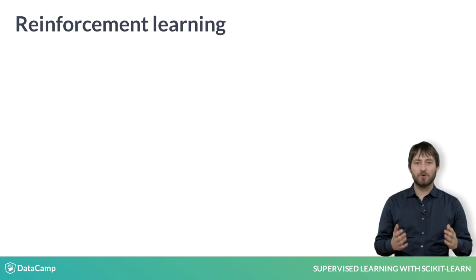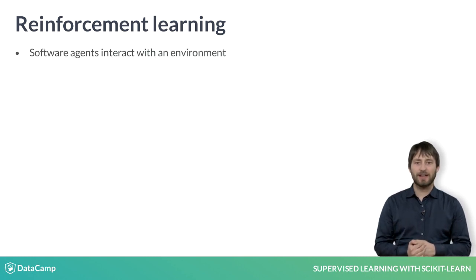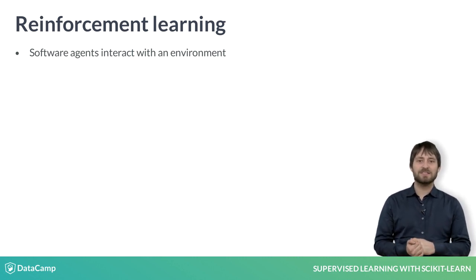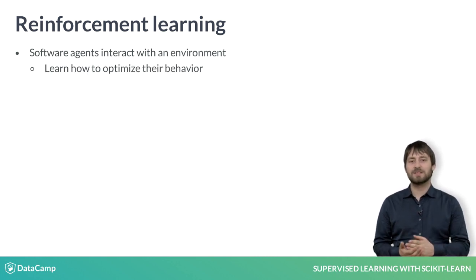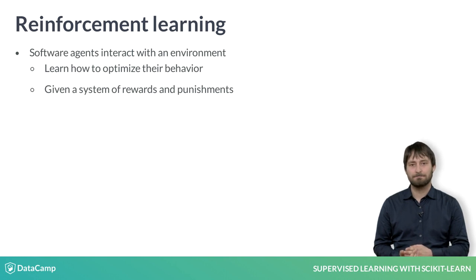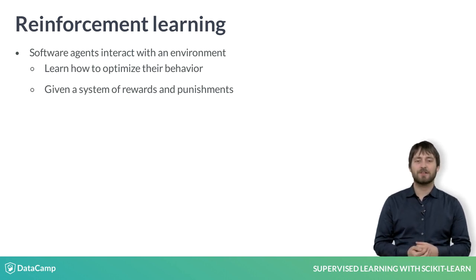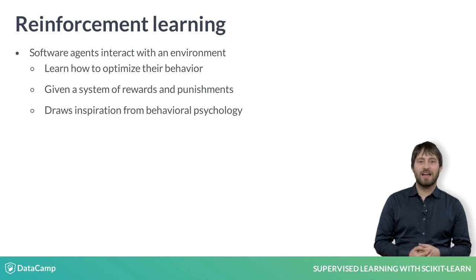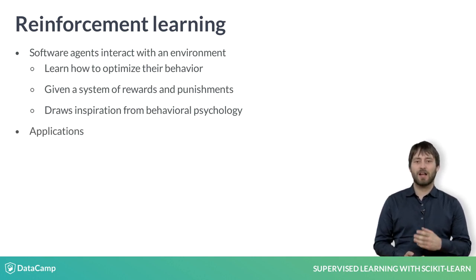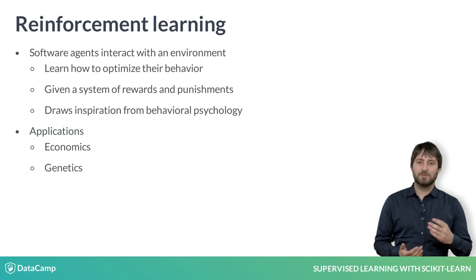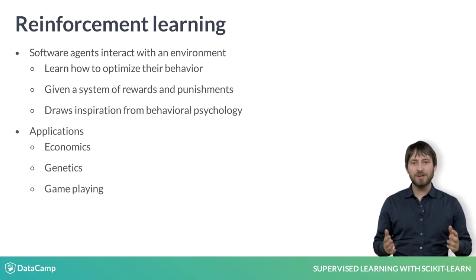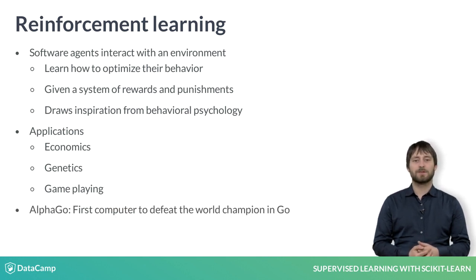There is also reinforcement learning, in which machines or software agents interact with an environment. Reinforcement learning agents are able to automatically figure out how to optimize their behavior given a system of rewards and punishments. It draws inspiration from behavioral psychology and has applications in fields such as economics, genetics, and game playing. In 2016, reinforcement learning was used to train Google DeepMind's AlphaGo, which was the first computer program to beat the world champion in Go.